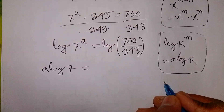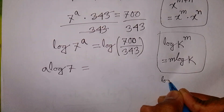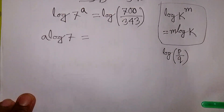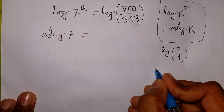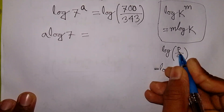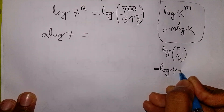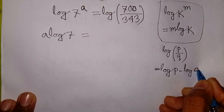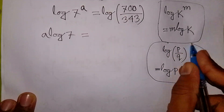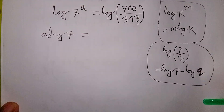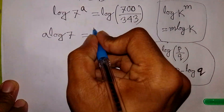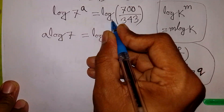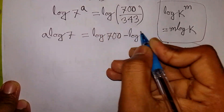On the right side, we apply the formula that log of p over q is equal to log p minus log q. So it will be log 700 minus log 343.